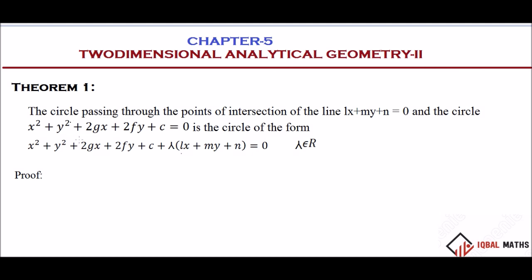Let's use this theorem. The circle passing through the point of intersection of the line lx plus my plus n equal to 0, and the circle equal to 0. If a line and a circle intersect, the form of that circle is given by this theorem.